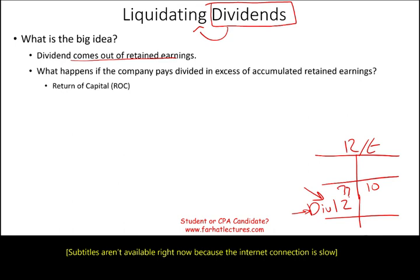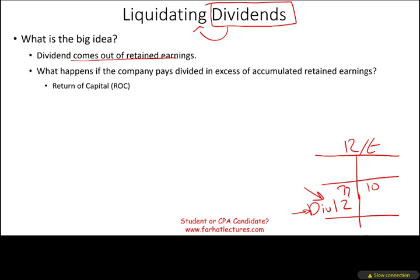Remember, dividend comes out of earnings. Dividend is a distribution of the profit. So if you don't have the profit, what are you distributing? Simply, what you are distributing is the capital — the money that the investors invested in the company initially. This is called return of capital, or ROC. It is allowed, if that's what you want to do.